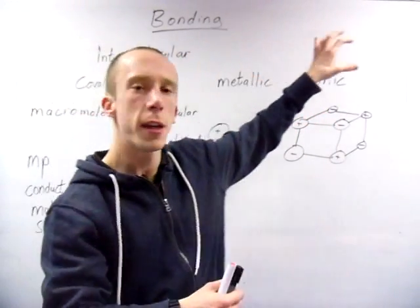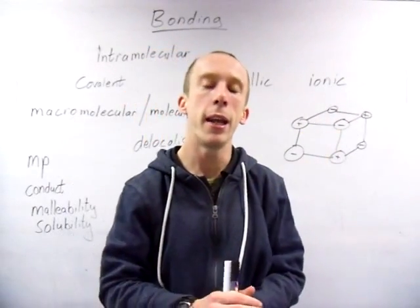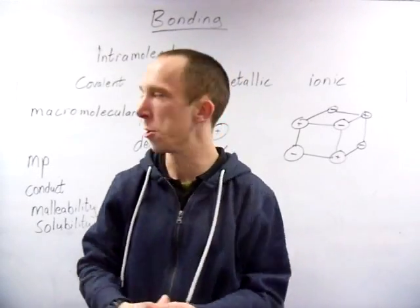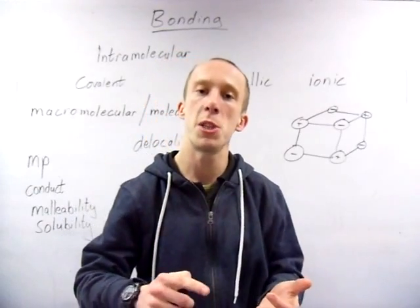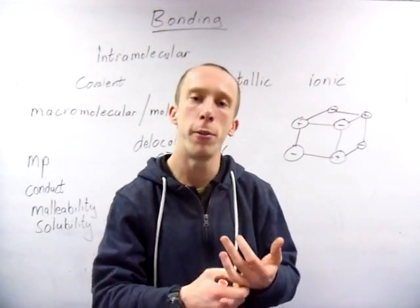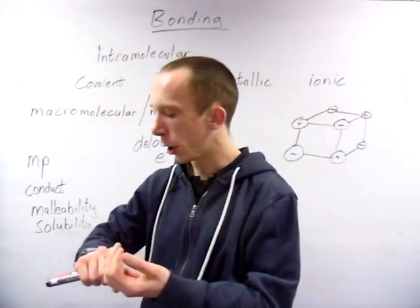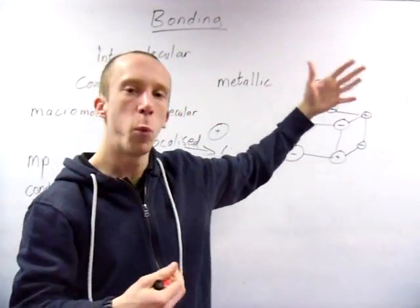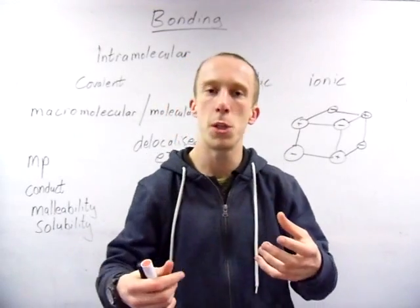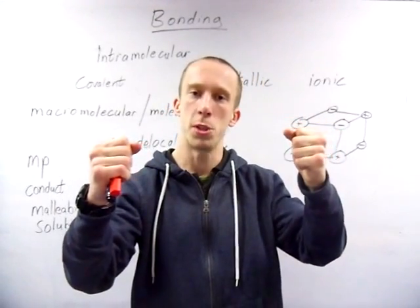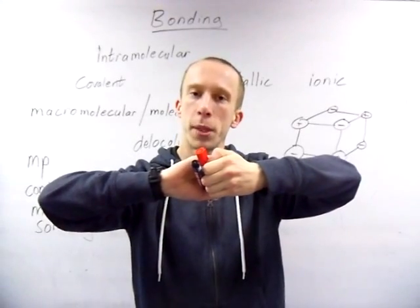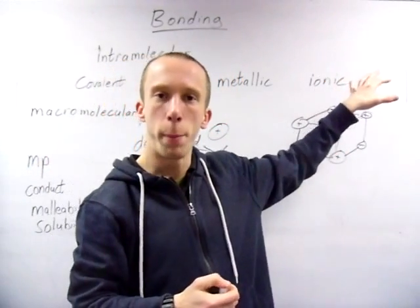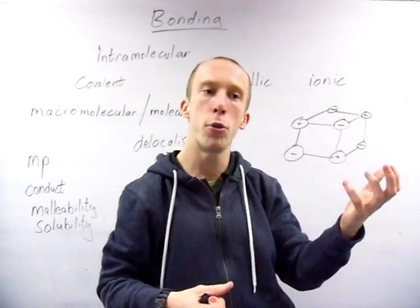So that's all the properties for the intramoleculars. In terms of why things form covalent and ionic bonds, that brings in electronegativity. Electronegativity has a big part to play in the intermolecular forces. Electronegativity is the power of an atom to attract the shared pair of electrons in a covalent bond. So the covalent bond is where they share electrons; the ionic at GCSE you've usually heard it is the transfer.